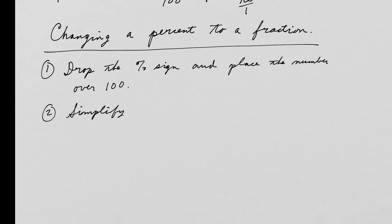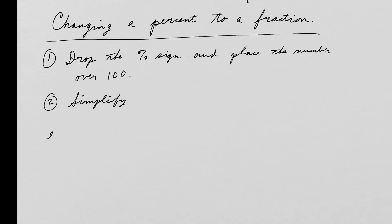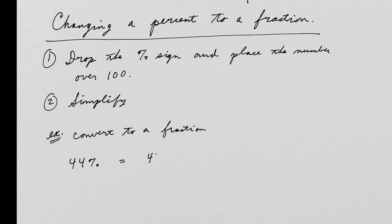For example, let's convert 44% to a fraction. This really means 44 over 100. I remove the percent symbol and then simplify. 44 is 11 times 4, and 100 is 25 times 4, so I can cancel a factor of 4. This gives 11 over 25. So 44% as a fraction is 11/25.